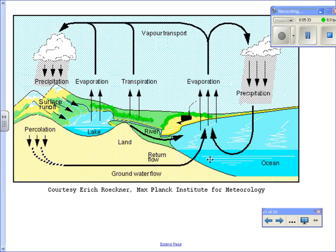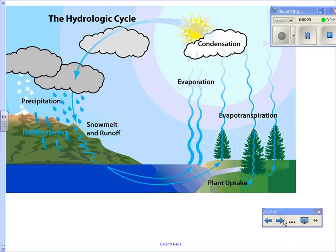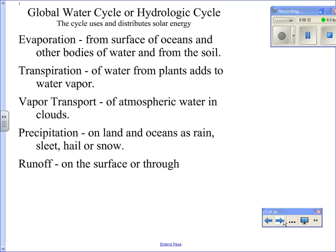Some water is absorbed by plants and then released into the atmosphere through transpiration. The major source of water into the atmosphere is from the ocean by way of evaporation. As air rises, it cools, condenses, and eventually forms clouds, then you have precipitation and the cycle repeats. You have evaporation from the ocean, evapotranspiration from plants and vegetation, then condensation going from gas to liquid phase, then precipitation.